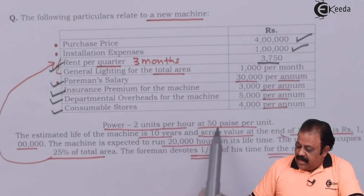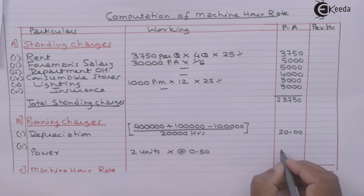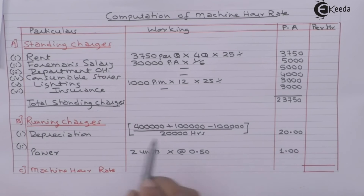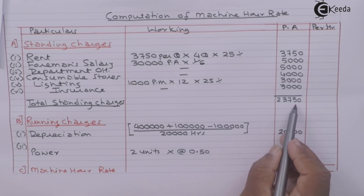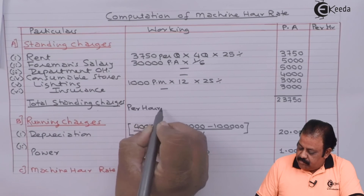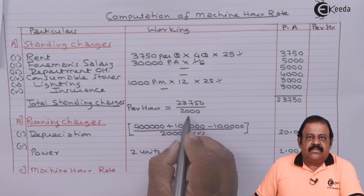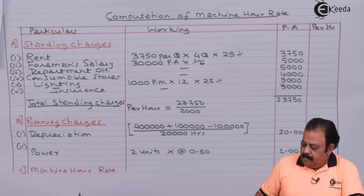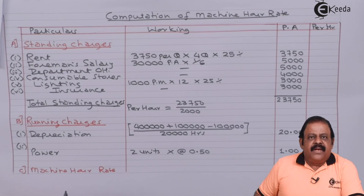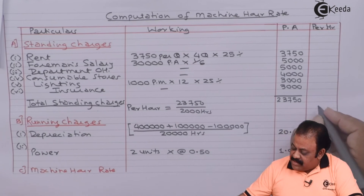Power is 2 units per hour at 50 paise per unit, giving 1 rupee per hour as the power running charge. For standing charges, the total of 23,750 per annum is divided by 2,000 hours per year, which comes to 11 rupees 87.5 paise, that is 11.875 per hour.